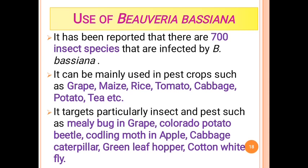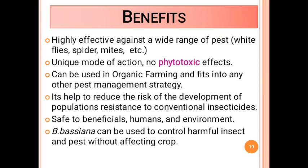Uses of Beauveria bassiana: it is used for all major crops to control mealybugs, beetles, moths, hoppers, and whiteflies. Benefits: it is highly effective against a wide range of insects, has no phytotoxic effects, can be used in organic farming, and is safe for humans and the environment.